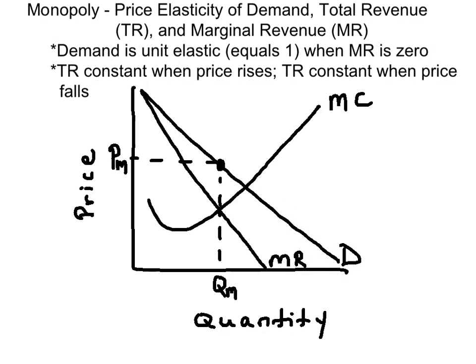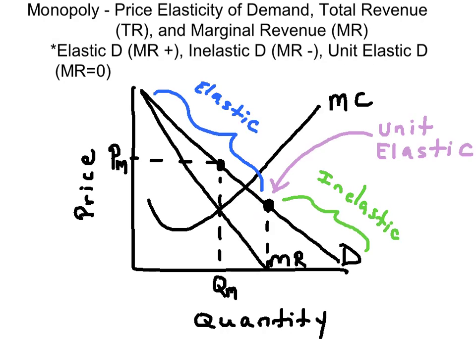To find the region of the demand curve where the price elasticity of demand is equal to 1, or unit elastic, we just find where marginal revenue is 0 and travel up to the demand curve. So in this region, since marginal revenue is 0, the demand is unit elastic. When demand is unit elastic, total revenue will remain constant when the price changes.